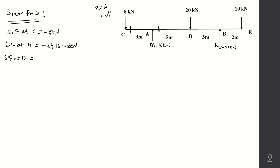Shear force at D: looking to the left we have −8 + 16 − 20 = −12 kN. Alternatively, shear force up to A is +8, then applying the 20 kN load: +8 − 20 = −12 kN. Shear force at D = −12 kN.